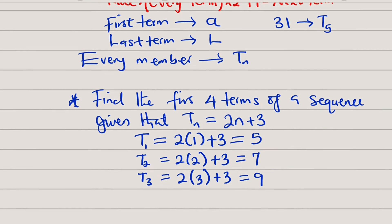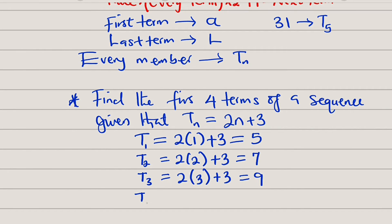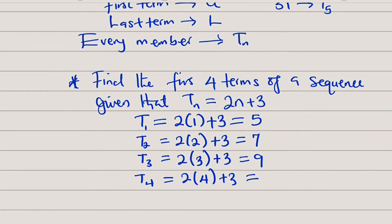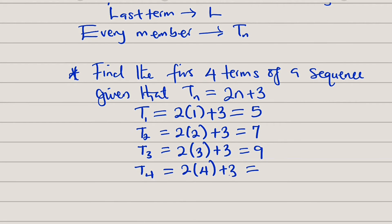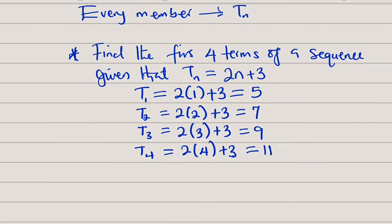Then the last member, term number 4, is equal to 2 multiplied by 4 plus 3. This is equal to 8. And 8 plus 3 is equal to 11. And hence, we can now write the members.